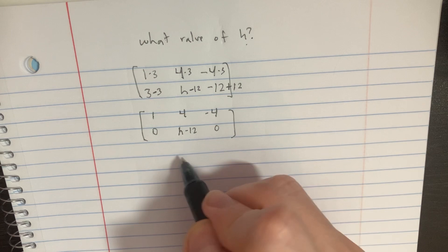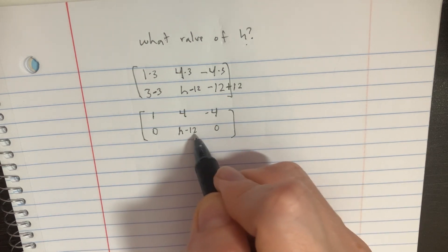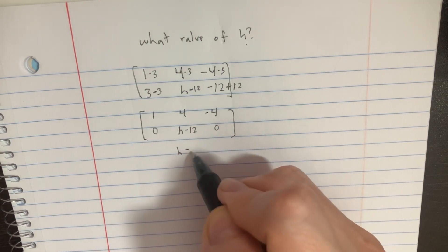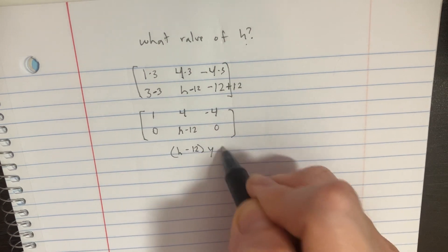So we kind of get this expression here that, well, we'd actually get h minus 12, y is equal to 0.